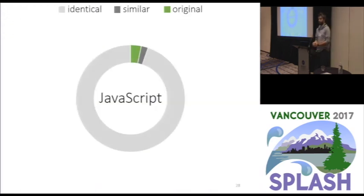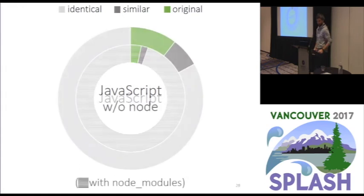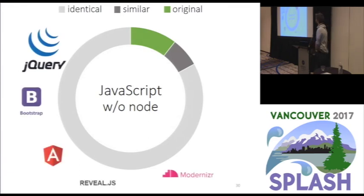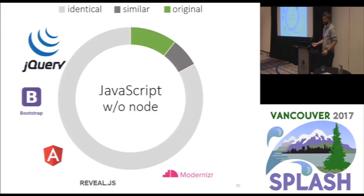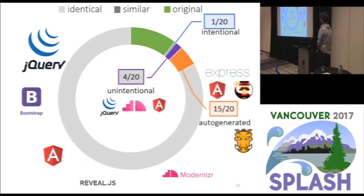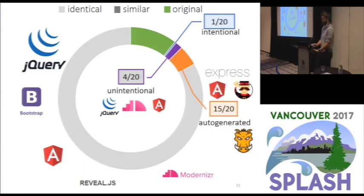Knowing this, we get back to JavaScript. With all files included in the inner circle, the outer circle excludes Node files. Excluding Node, the picture is slightly more similar to the other languages. It is still dominated — this time by jQuery, which was over 50% of the most frequently copied files — followed by a couple of other famous frameworks. Looking at similar files, most were auto-generated: AngularJS, Grunt, Yeoman, and Express. Some were unintentional — various versions of libraries. We found one intentional clone: a file that had been renamed with one token changed.